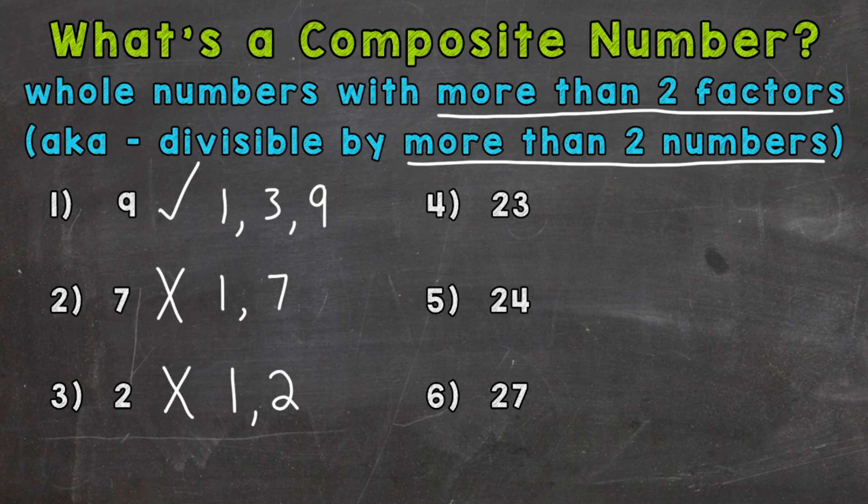On to number four, where we have 23. We need to think of its factors. What numbers can we multiply together to equal 23? Well, 23 only has two factors, one and 23. So 23 is prime as well. It is not composite.